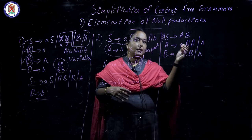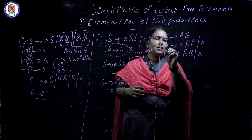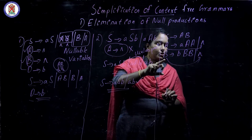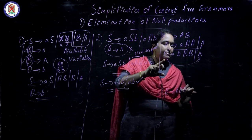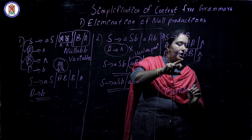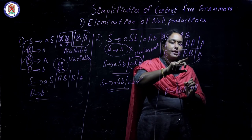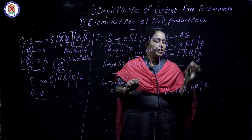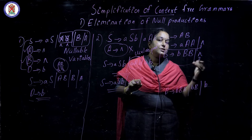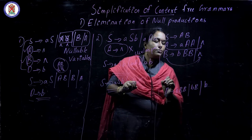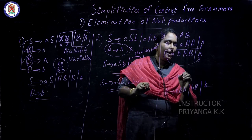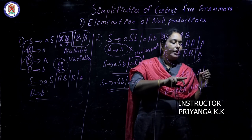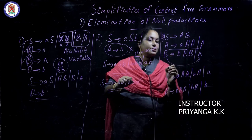Now look at example 3. The nullable variables are A and B. Starting from the last production, B derives — we preserve it and eliminate it. Eliminate first B to get B B; eliminate the other B to get the same grammar. Eliminating both gives just P. Next, A gives — preserving and eliminating gives A A; eliminating both gives just A A.